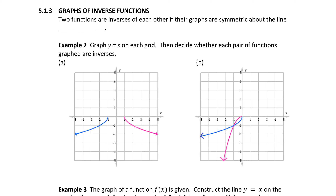Two functions are inverses of each other if their graphs are symmetric about the line y equals x. We've talked about different types of symmetry before — reflecting a graph across the x-axis and y-axis when studying transformations. This is a new type of symmetry: symmetry about the line y equals x.